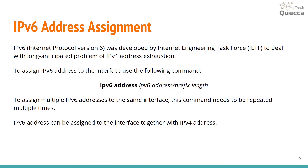IPv6 address assignment: IPv6 was developed by the Internet Engineering Task Force to address the long-anticipated problem of IPv4 address exhaustion. To assign an IPv6 address to an interface, use the command: ipv6 address [IPv6 address] [prefix length]. It is very simple — almost the same as for IPv4. To assign multiple IPv6 addresses to the same interface, repeat this command for each address. IPv6 addresses can be assigned to an interface together with IPv4 addresses.